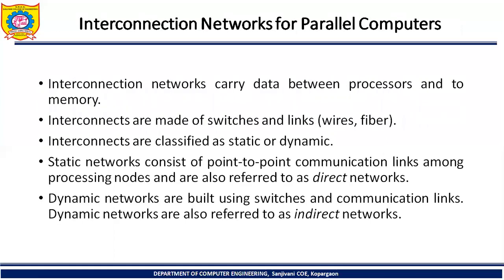Interconnection networks for parallel computers carry data between processors and memory. Interconnects are made up of switches and links — that is, wires and fibers. Interconnects are classified as static or dynamic. Static networks consist of point-to-point communication links among the processing nodes and are also referred to as direct networks. Dynamic networks are built using switches and communication links and are referred to as indirect networks.